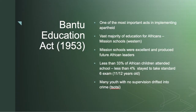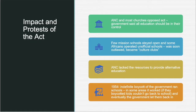The Bantu Education Act was one of the most important acts in implementing apartheid. The vast majority of education for Africans was in mission schools, which were excellent and produced future African leaders. Less than 33% of African children attended school, and less than 4% stayed to take the Standard 6 exam. Many youth with no supervision drifted to crime. The ANC and most churches opposed the Act. The government said all education should be under their control. Few mission schools stayed open, and some Africans operated unofficial schools, which were soon outlawed. The ANC lacked resources to provide alternative education, and in 1954, an indefinite boycott of government-run schools began. In some areas it worked, and eventually the government let them back in.